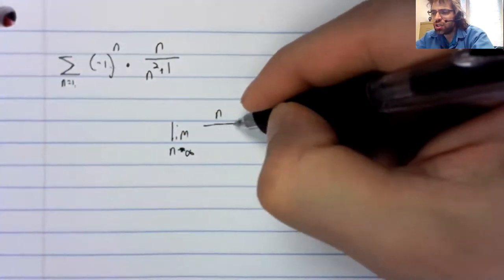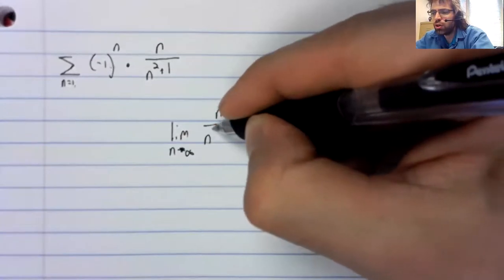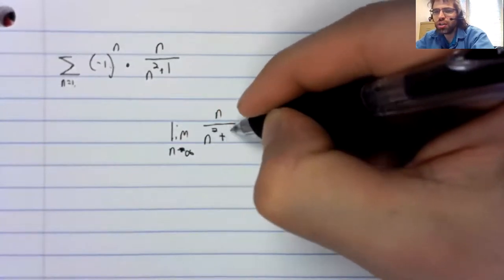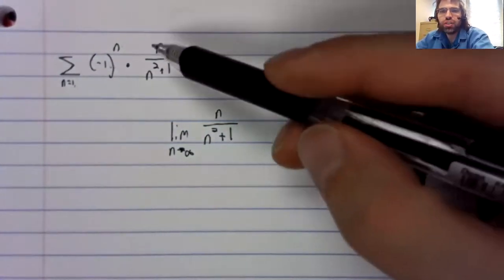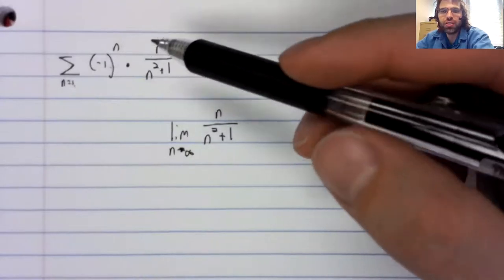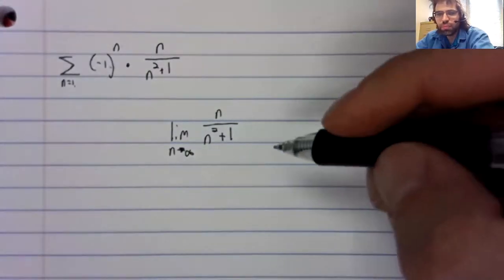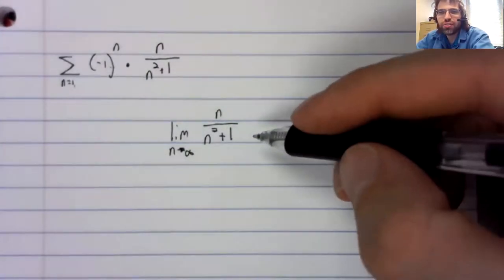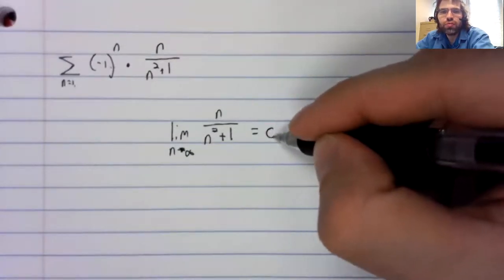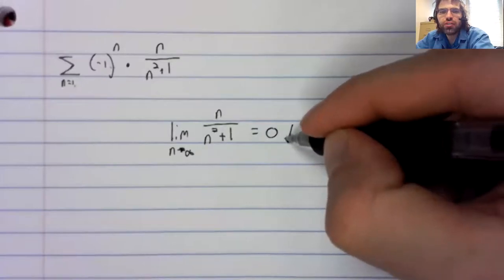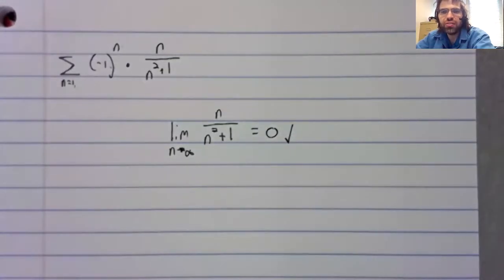There are a few things we could try. The ratio test and the root test don't need stuff to be positive, but alternating series is kind of crying out for the alternating series test.